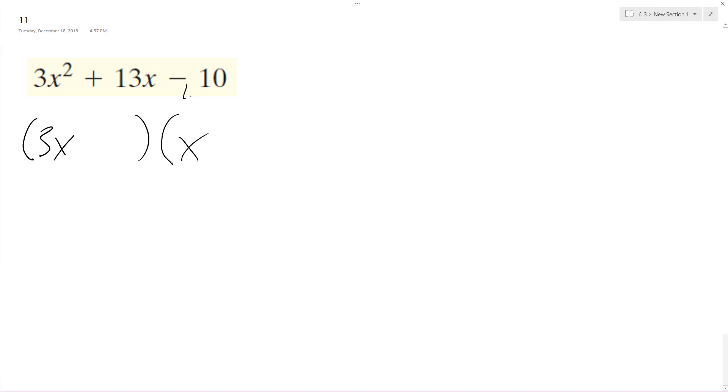All right, so then I need to factor negative 10 out so I get a positive here. So I know I'm going to have one positive, one negative. So it looks like I'll multiply by a negative 5 with my 3 and then a positive 2.